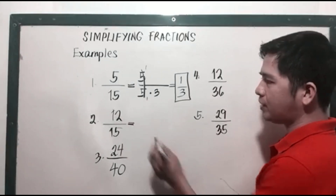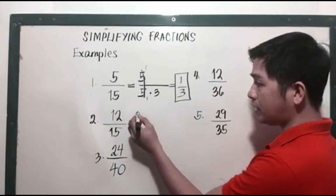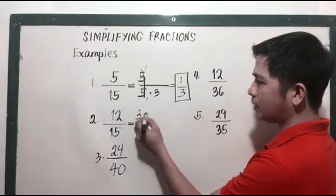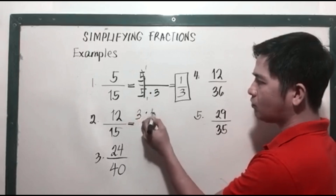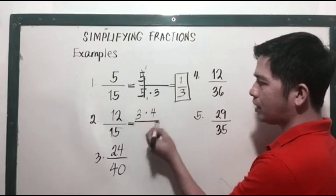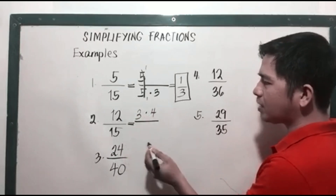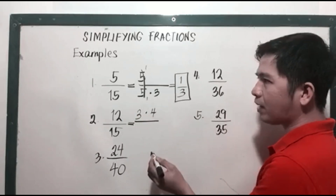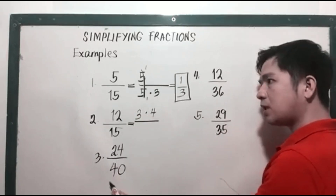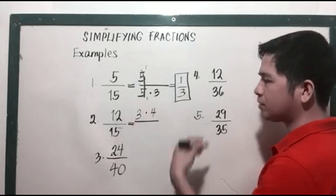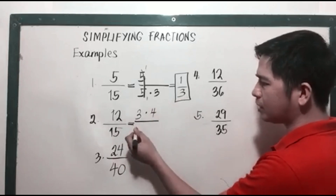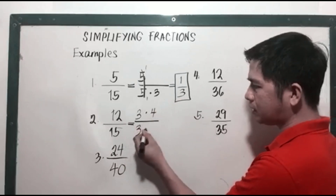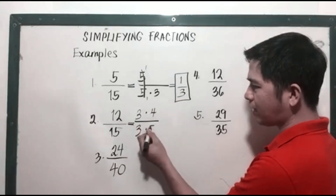Next, number 2, we have 12 over 15. 12 can be factored as 3 times 4, and 15 can be factored as 3 times 5.